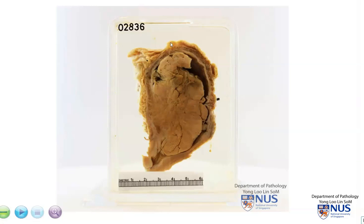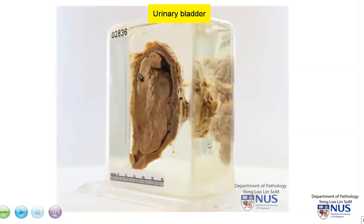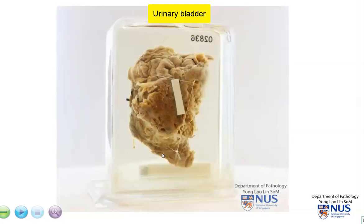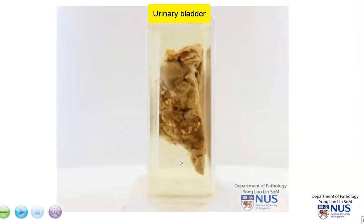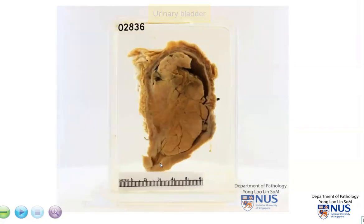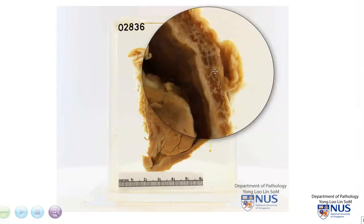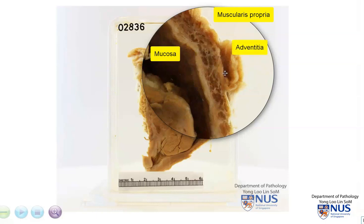Hello. Here we have a specimen of the urinary bladder that has been bisected — just orientating you. This is the fat and soft tissue around the bladder. Let's have a quick look at the bladder wall and focus on the layers of the wall. This very obvious darker brown area is the muscularis propria, and this layer is the mucosa. There is also some adventitial fat.